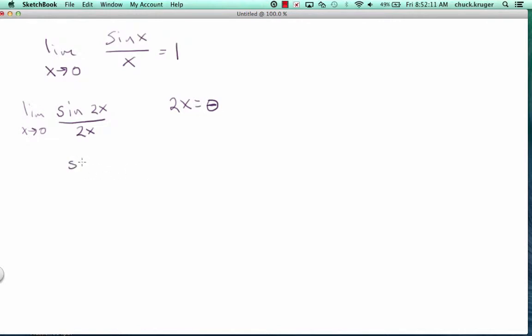So this is going to be sin(theta)/theta. And I have a limit. Now, something's going to 0, but it's not x because I've replaced 2x with theta. So that means x would be theta/2. So theta/2 is headed to 0. Well, if half of theta is headed to 0, that must mean theta is also headed to 0.